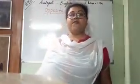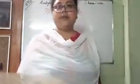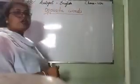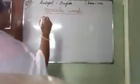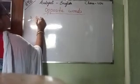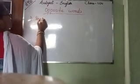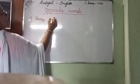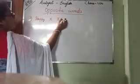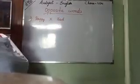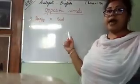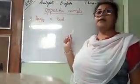What is the spelling of happy? H-A-P-P-Y. Happy. Number one: H-A-P-P-Y. Happy. Opposite is S-A-D. Sad. Happy. Sad.